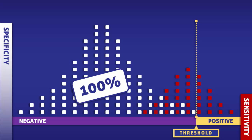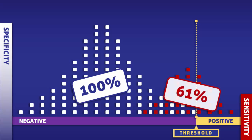The sensitivity, however, has dropped to 61%. So although the test is not detecting the condition in individuals who do not have it, it is also incorrectly excluding the condition in people who do have it.